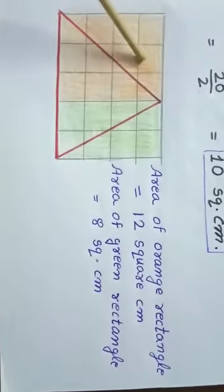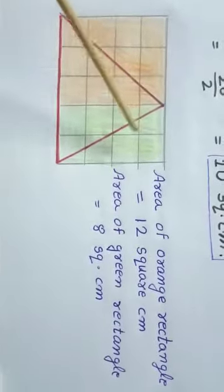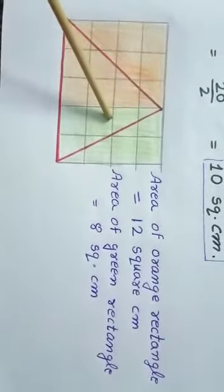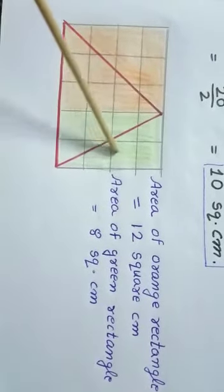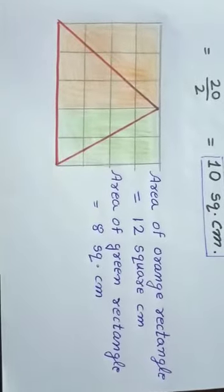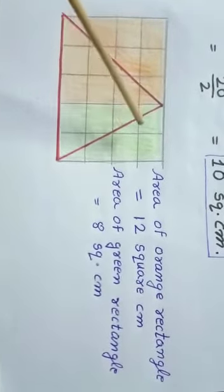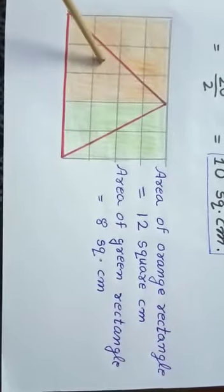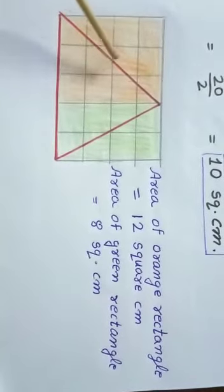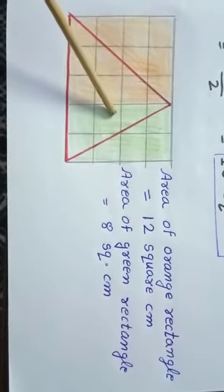We count the green squares: there are 8. So the area of the green rectangle is 8 square centimetres. To find the total area of the red triangle, we take half of the orange rectangle area plus half of the green rectangle area. Area of red triangle equals half of orange rectangle plus half of green rectangle. The area of the orange rectangle is 12 square centimetres, so we take 12 divided by 2, plus the area of the green rectangle, 8 square centimetres, divided by 2.